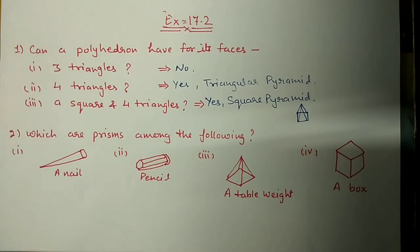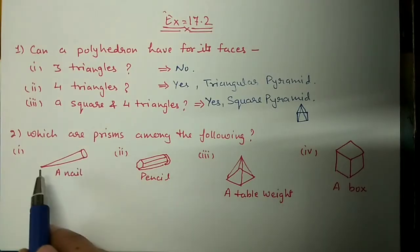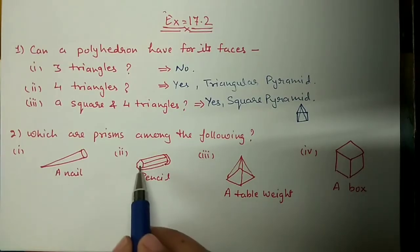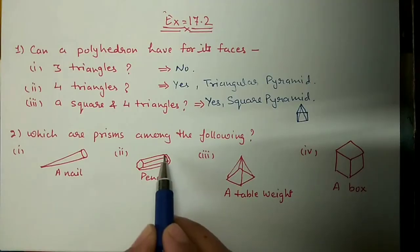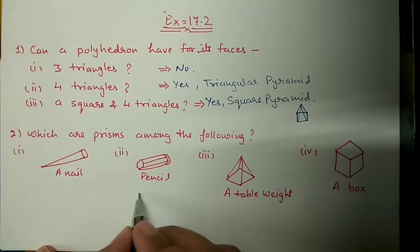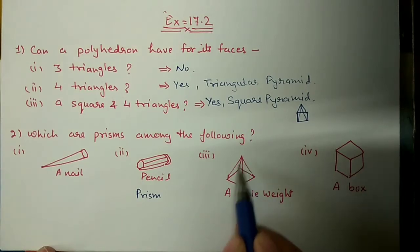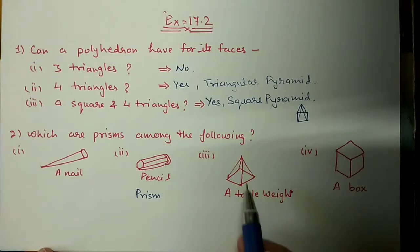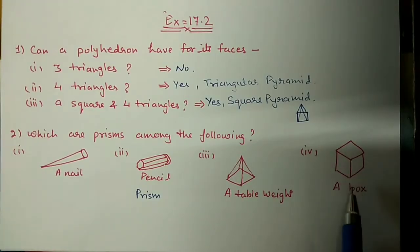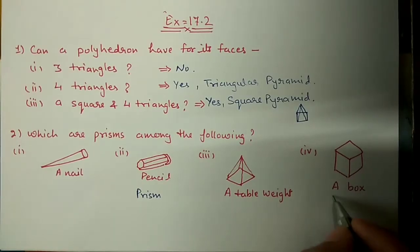Question number 2: Which are prisms among the following? Prism means the top and base should be congruent to each other. In the first figure we have a base but no top - all corners meet at one point - so this will not come under prism. In the second one, base and opposite side are congruent, so this will come under prism. The third figure has triangles meeting at a point - it comes under pyramid. The fourth figure is a box where top and base are the same, so this will come under prism.